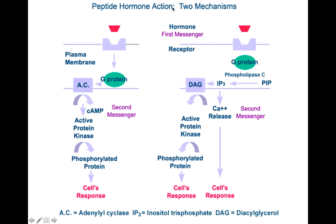For peptide hormone action mechanisms: the peptide hormone combines with a receptor on the outside of the cell membrane. It activates something on the inside of the cell membrane called G-protein, and G-protein activates adenylate cyclase.